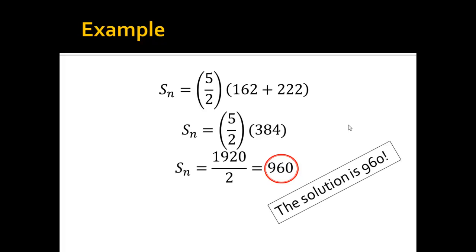And that's the solution. So, basically, if I added up the eleventh through fifteenth term of this sequence, that's given by the rule negative three plus fifteen n, I would get nine hundred and sixty.